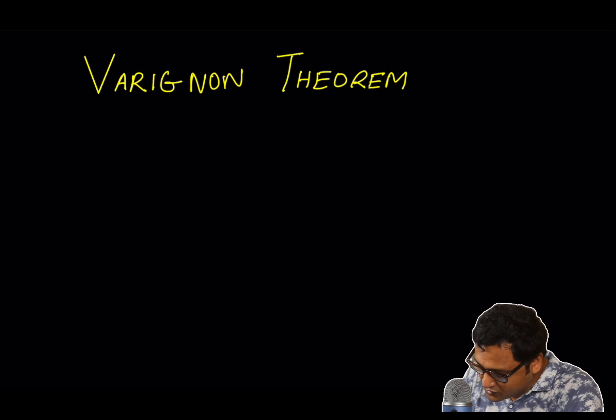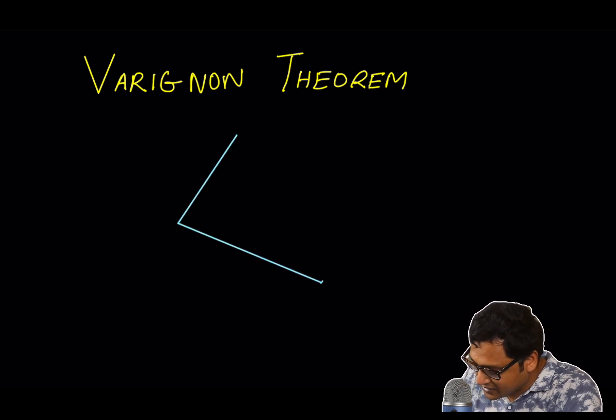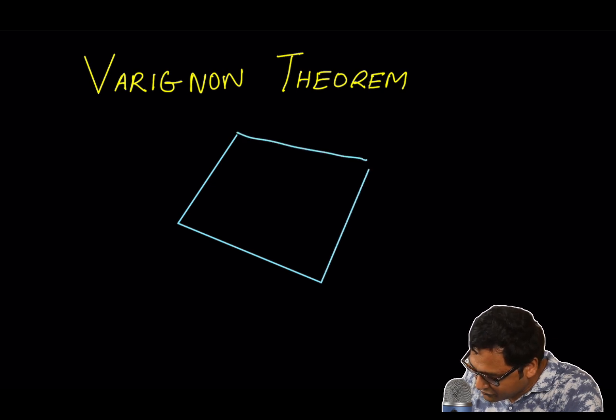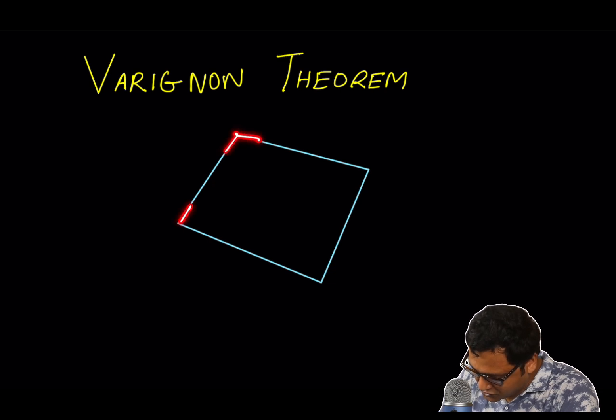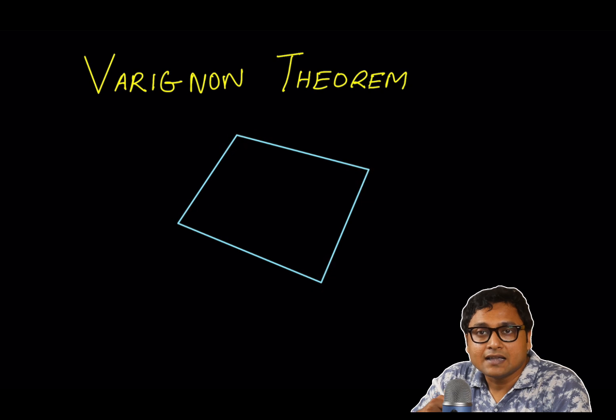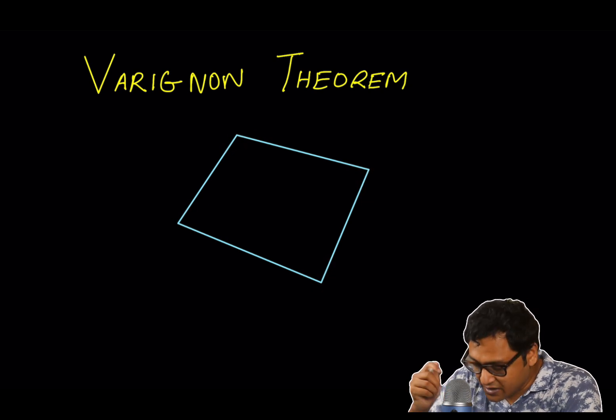It's quite simple actually. Suppose you have any quadrangle. Quadrangle means a figure with four angles. Four angles. So, one, two, three, and four. In any quadrangle,